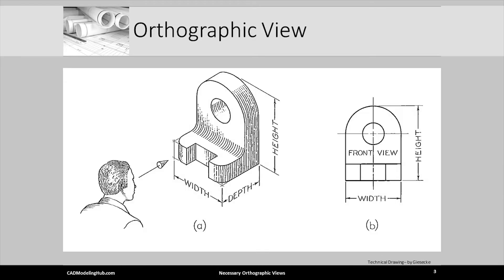In previous lectures, we introduced the concept of orthographic views, where all viewing vectors or lines of sight are parallel. In this simple example, parallel viewing vectors would produce what is shown in B and would be called the front orthographic view.